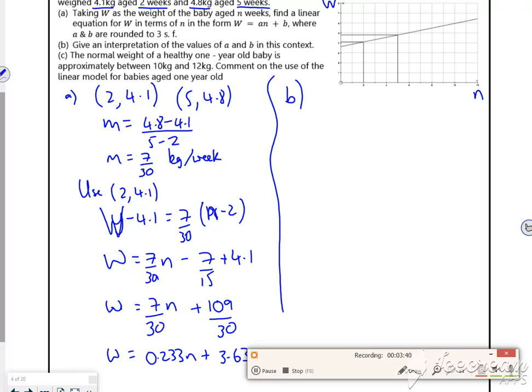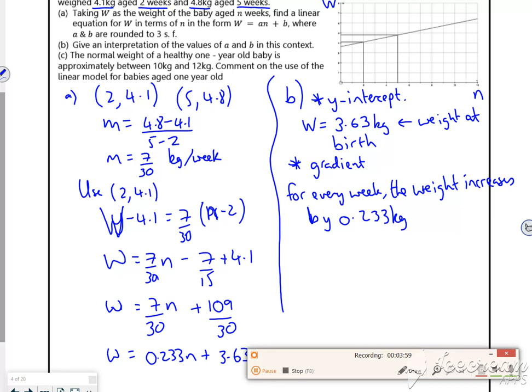So interpretation of the values of A and B. So I've got the weight. So what we've got here. So the 109 over 30 is going to be the weight at birth. And then I've got a thing. I'll tell you what I do. I'm going to pause it. How am I going to have time today? I'm just going to pause it and write down part B. I'm not sure if you can read that. To be fair, my writing's all over the show tonight.